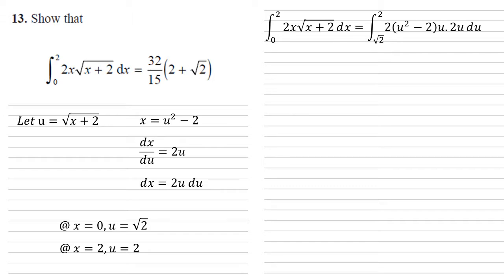Now multiplying this together and expanding the brackets gives us the integral between root 2 and 2 of 4u to the power of 4 minus 8u squared du. Much simpler to integrate now. We've got powers of u.